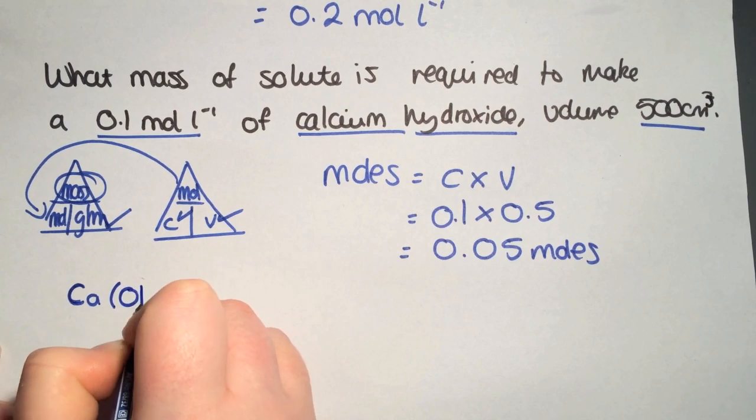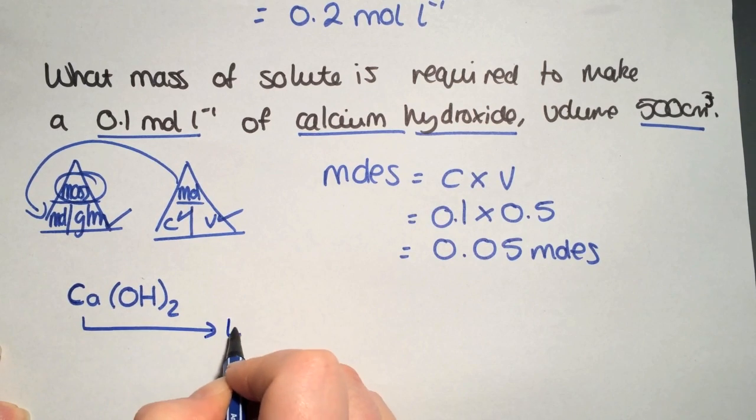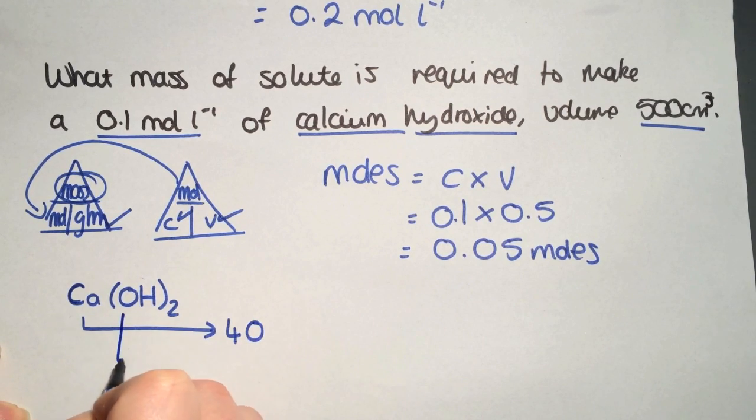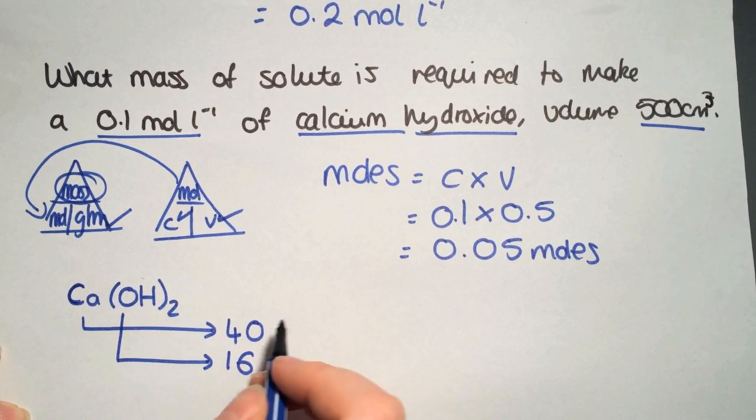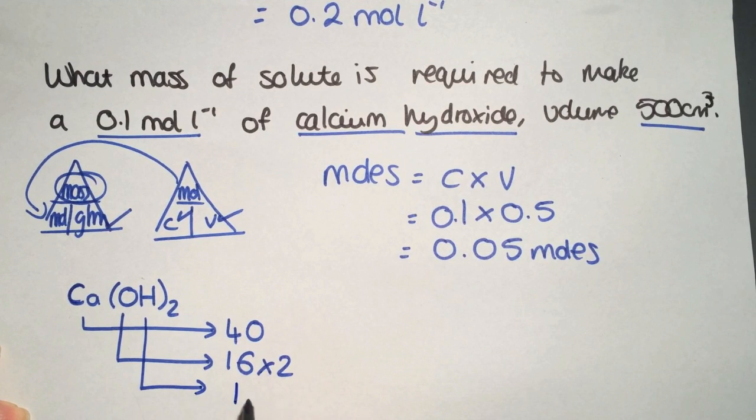Next, work out gram formula mass. Calcium hydroxide is Ca(OH)2. Calcium has a relative atomic mass of 40, oxygen is 16 multiplied by 2 from outside the brackets, and hydrogen is 1 multiplied by 2. That gives a total gram formula mass of 74.